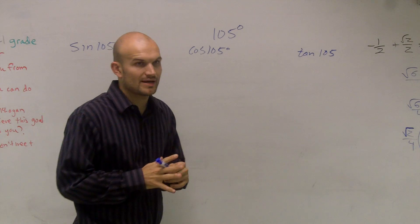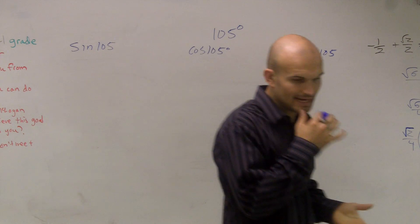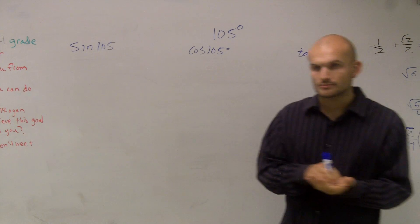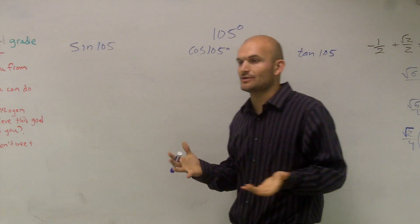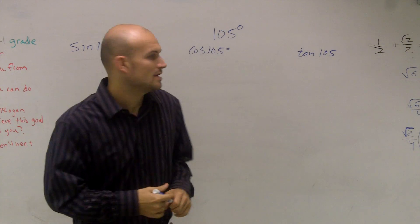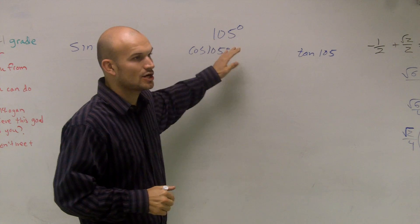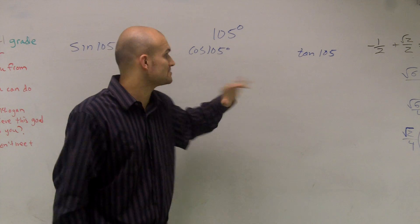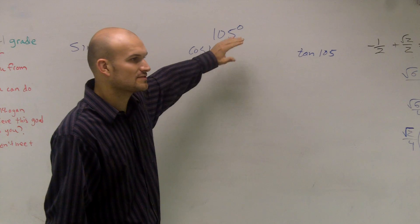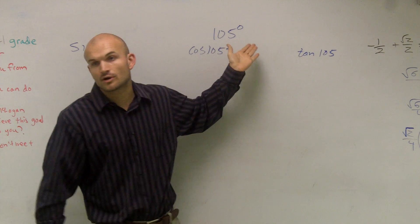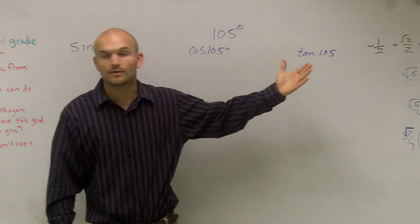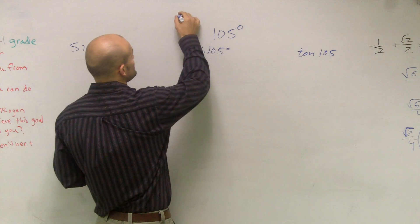So again, here what we have is 105 degrees. And so what we need to do to find the measure of this 105 degrees, I need to start thinking about what angles on my unit circle can I use that I can represent 105 degrees as either a sum or a difference. Because I can't find, for as far as the points on the unit circle that I know, I can't figure out where 105, that's not going to land on one of those.